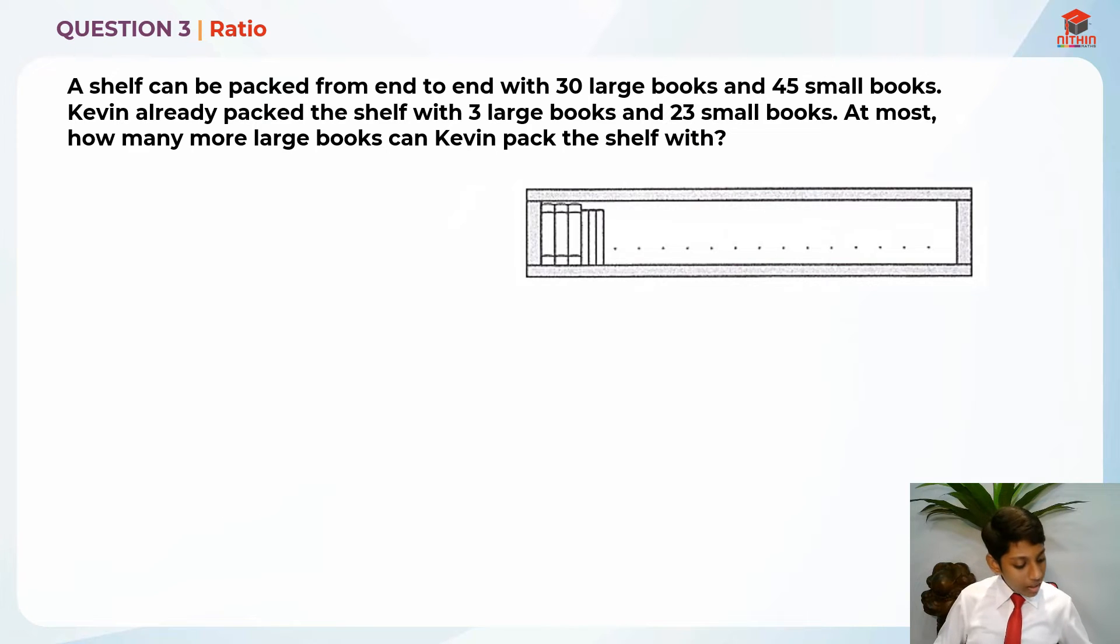So they're asking at most, how many more large books can Kevin pack the shelf with? They already packed the shelf with 3 large and 23 small books and the capacity is basically 30 large and 45 small books.